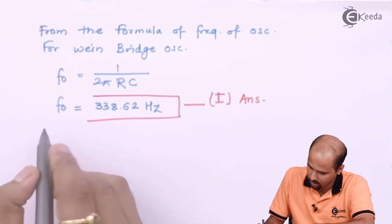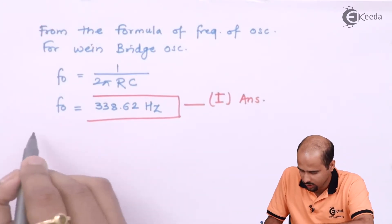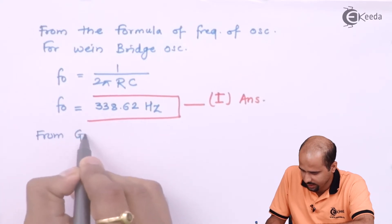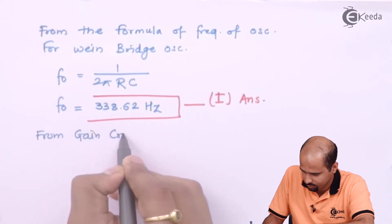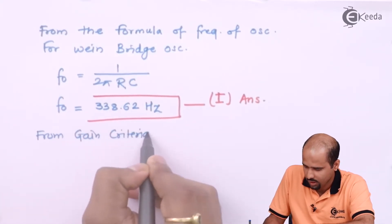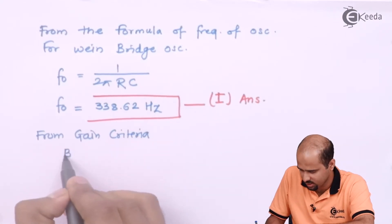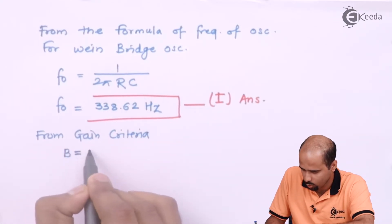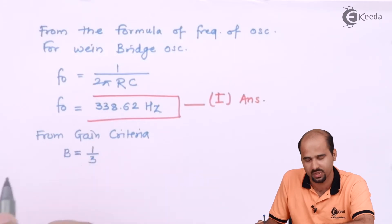It's very nicely done in this particular numerical. From gain criteria, I know that beta is equal to 1 upon 3, right.